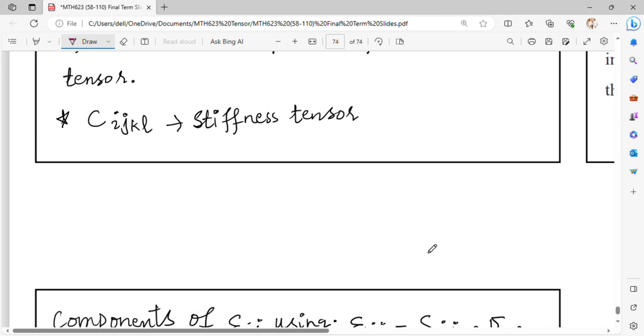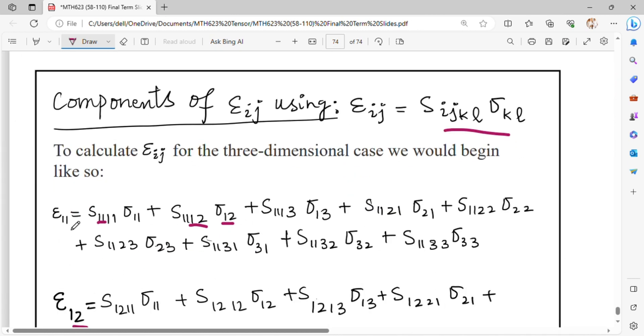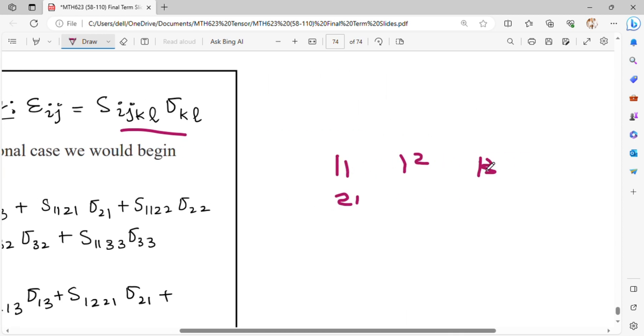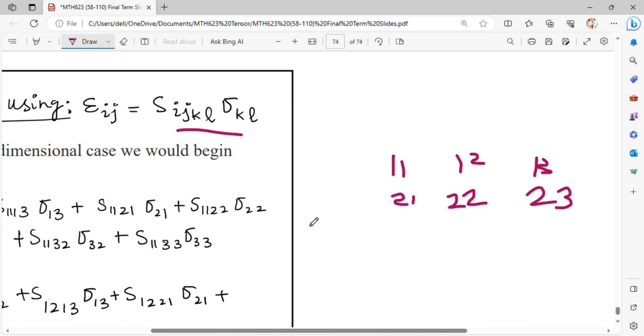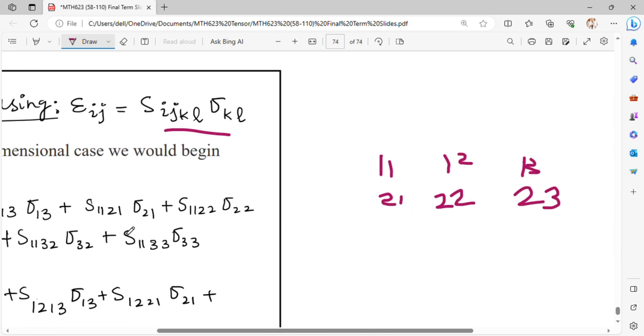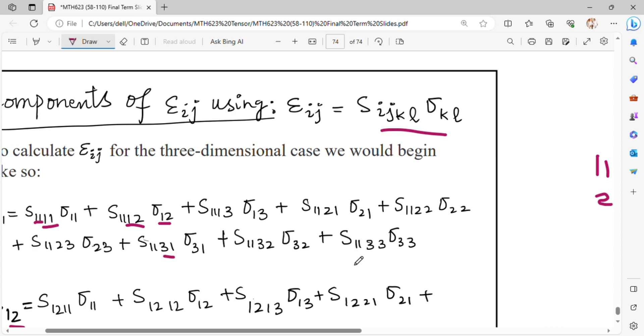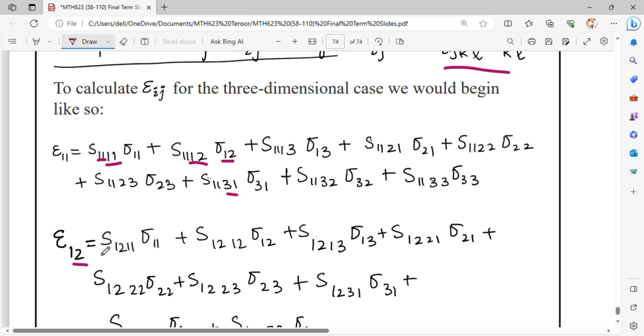To calculate epsilon_ij, we fix indices i and j, then vary k and l to get all components. For example, when ij is fixed at 1,1, we vary kl through all combinations: (1,1), (1,2), (1,3), (2,1), (2,2), (2,3), (3,1), (3,2), (3,3) to get the matrix form. Similarly, you can calculate epsilon_12 by fixing ij at 1,2.